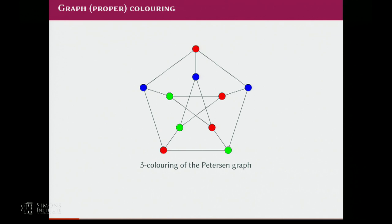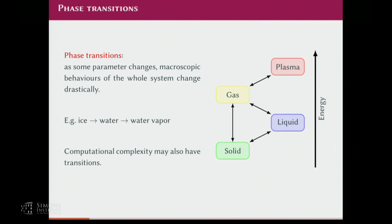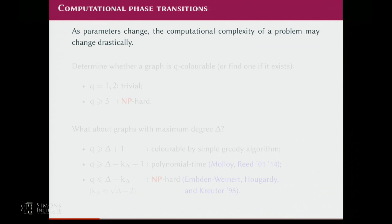Let's start with colorings. I believe most of you know this — this is a pictorial definition of colorings, and whenever I say coloring I mean proper coloring, so I want different colors for every adjacent pair of vertices. I'll also talk about a computational complexity phase transition, which is very well known for this audience. By computational complexity phase transition, I mean when some parameters change, the complexity of the problem also changes drastically.